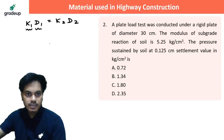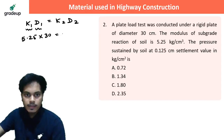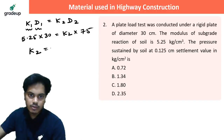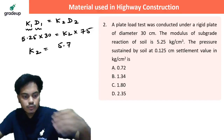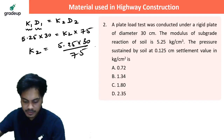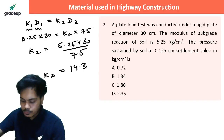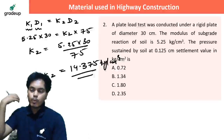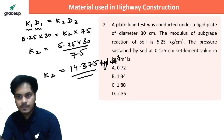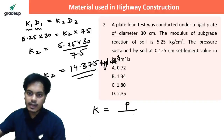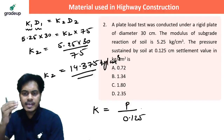Using the relation K1 × D1 = K2 × D2, where K is modulus of subgrade reaction and D is diameter of plate: K1 = 5.25, D1 = 30 cm, D2 = 75 cm (standard plate). So K2 = 5.25 × 30 / 75 = 2.1 kg/cm³. Modulus of subgrade reaction equals pressure divided by settlement, so pressure = K2 × settlement = 2.1 × 0.125.